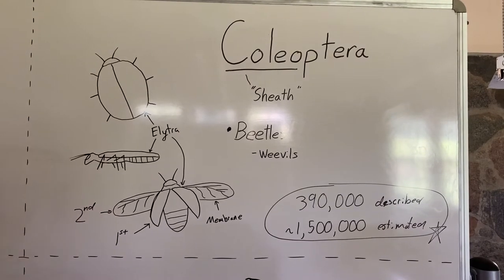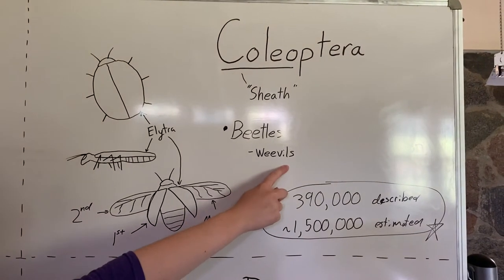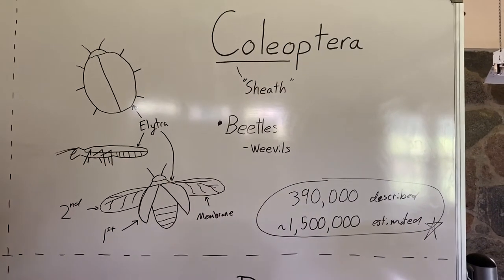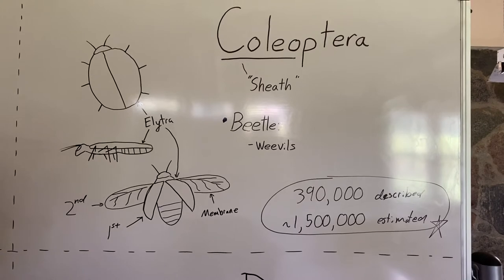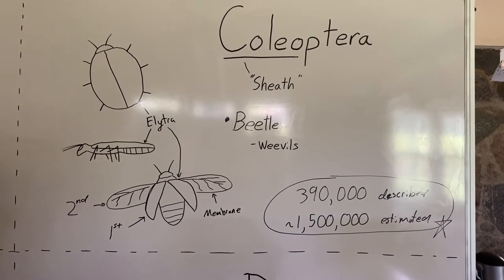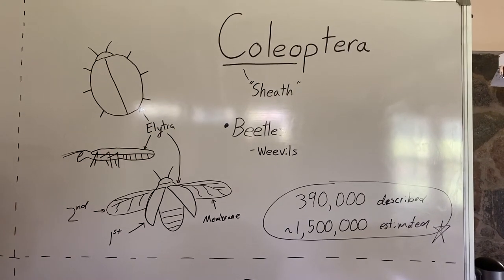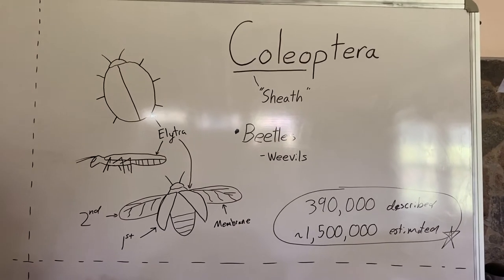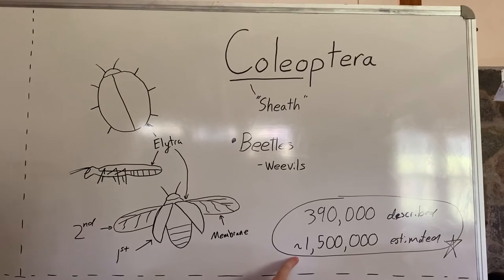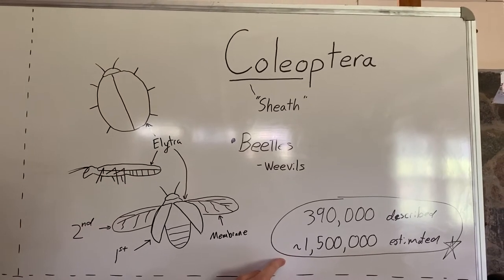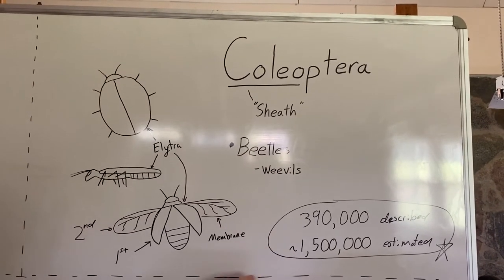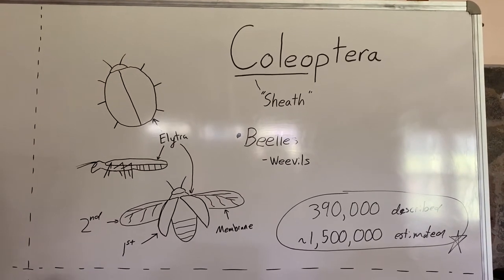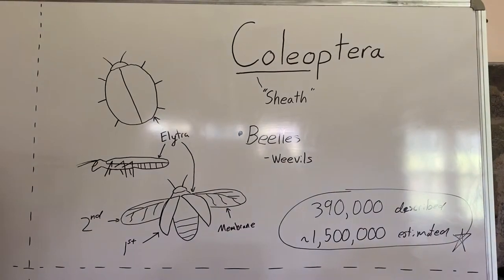Beetles come in all sorts of shapes and sizes. Beetles include weevils, which is actually quite a large grouping. There are about 390,000 described species in the world — meaning each has been specified with what it looks like and where it's found. But scientists actually estimate there are about 1.5 million species in the world, so there are a lot of species out there that haven't been discovered or defined yet. Beetles are a really cool, very diverse group.